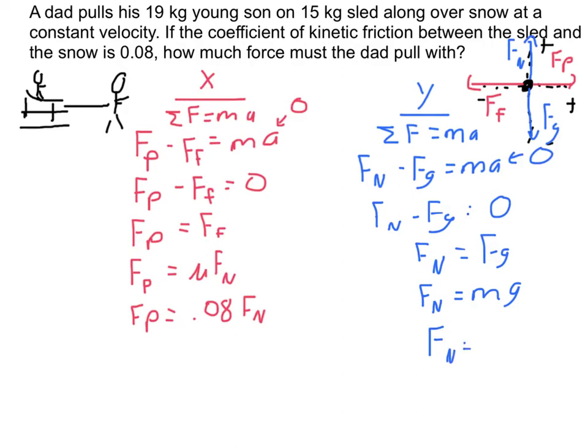So normal force, let's go ahead and plug in some numbers. The mass is the 19 kilogram boy plus my 15 kilogram sled times gravity 9.81. Gives me a normal force equal to 333.5, approximately newtons.